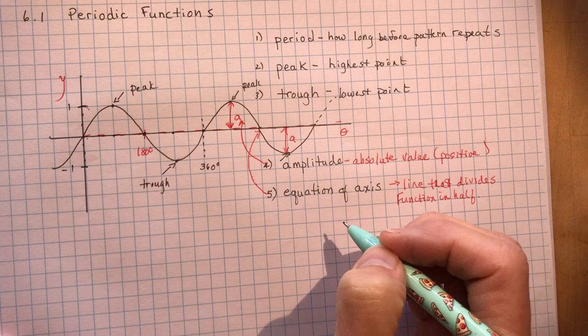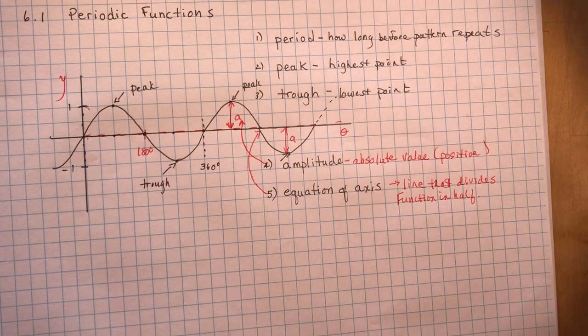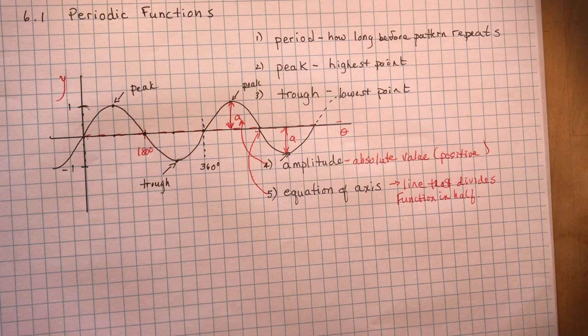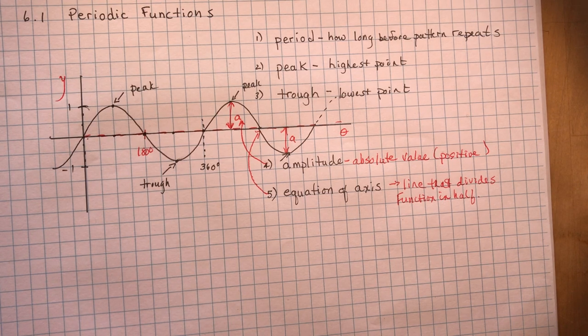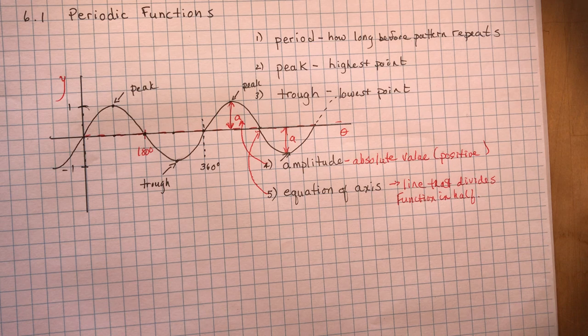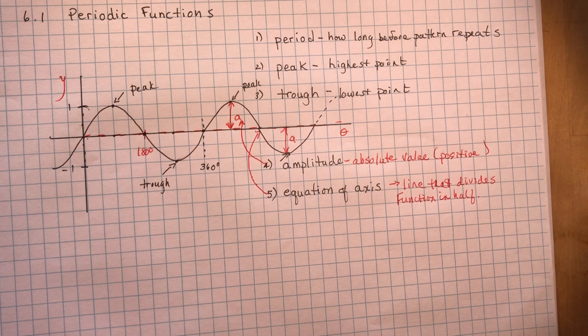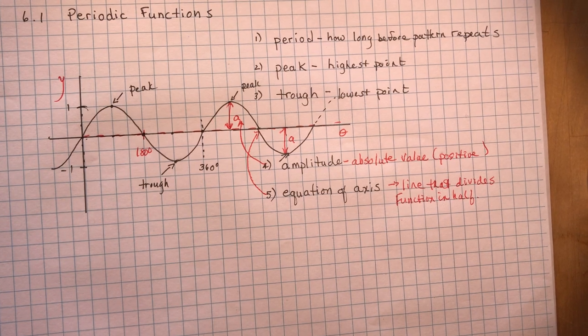So in trig functions, the amplitude is one and minus one. And we'll discuss more about that in 6.2. So that's all there was in periodic functions. I'm sure if you read through the textbook, it's very straightforward. They talk about different machines and how long before the pattern repeats. It's not a difficult lesson. You'll all ace that part. On to something more difficult with 6.2.